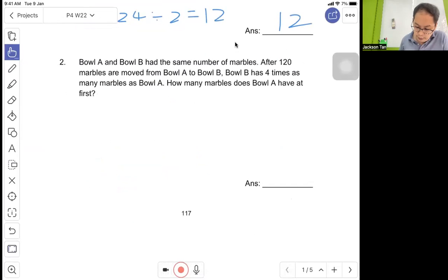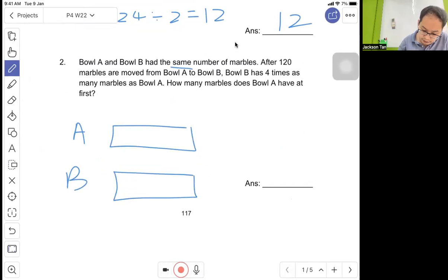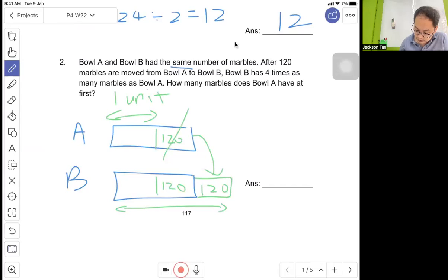Question 2: Both A and B have the same number of marbles. After 120 marbles move from A to B, B has 4 times as many marbles as A. Working from the front, this number we compared here will be 120. So this is one unit, this is four units because it's four times.